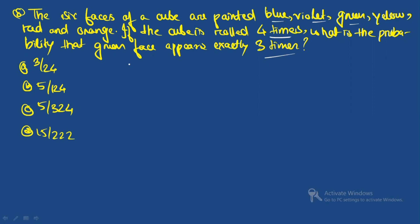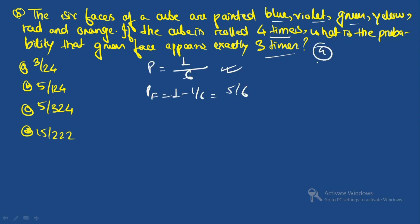The probability of success (green face) on any roll is P = 1/6, since there is one green face out of six. The probability of failure is 1 − 1/6 = 5/6.